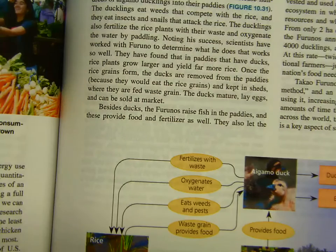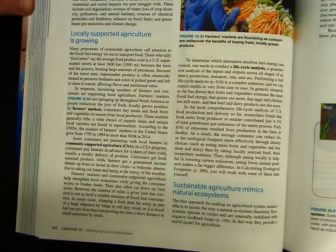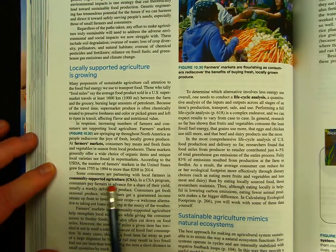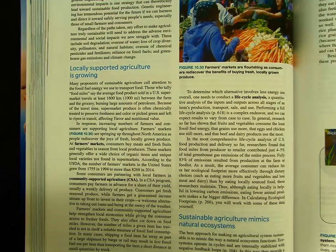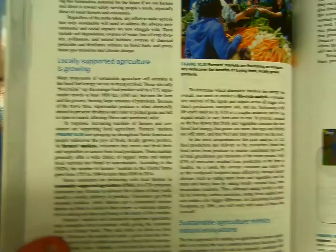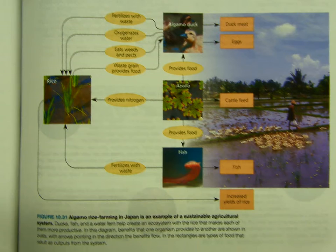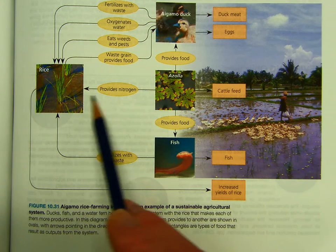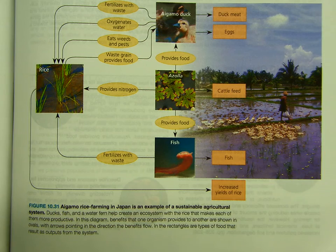Next is sustainable food production. Pages 262 and 263 connect back to the Dirt movie — they talked about farmer's markets and community-supported agriculture, where you pay a monthly or yearly fee for access to a farm's food. There's also a really good diagram showing how rice farming demonstrates sustainable agriculture: the rice is fertilized with waste and nitrogen in a system where everything fits together and everything is sustainable.